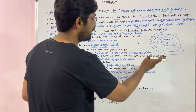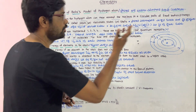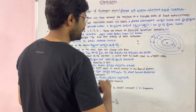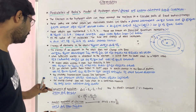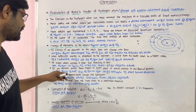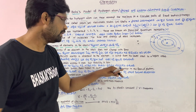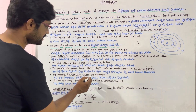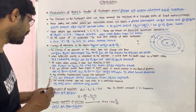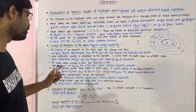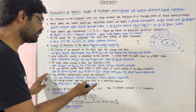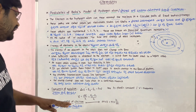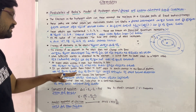When an electron falls from a higher orbit to a lower orbit, energy is released. This released energy comes out as photons. The photon emission causes the line spectrum to form. So when the electron jumps from a higher orbit to a lower orbit, a line spectrum is released.